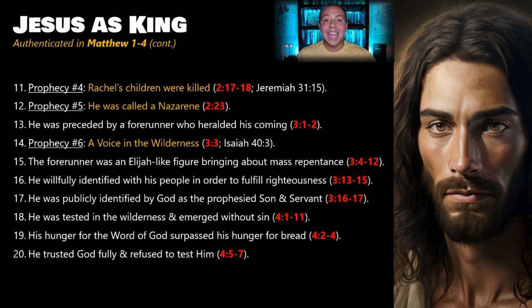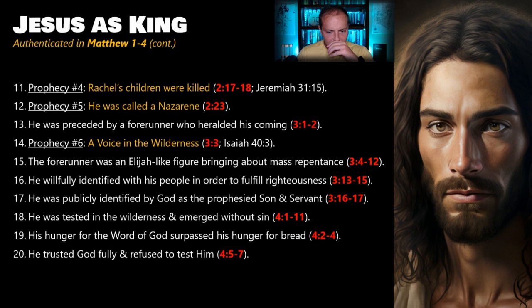Going into Matthew chapters three and four, you fast forward about thirty years and see Jesus as an adult showing up on the scene. Matthew begins to detail how things change once he actually shows up. First, we see that Jesus was preceded by a forerunner who heralded his coming — kind of like a king sending somebody ahead to prepare people for his arrival. Jesus was preceded by this forerunner named John the Baptist, who came in and said, 'Hey everybody, get ready — the king is about to arrive.'